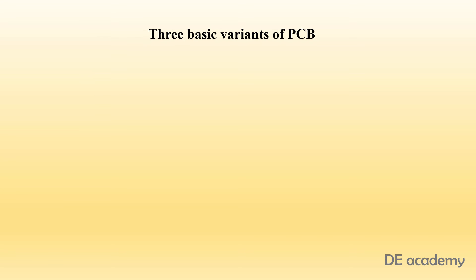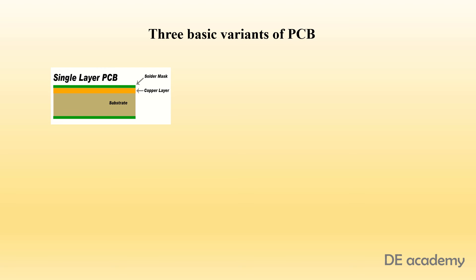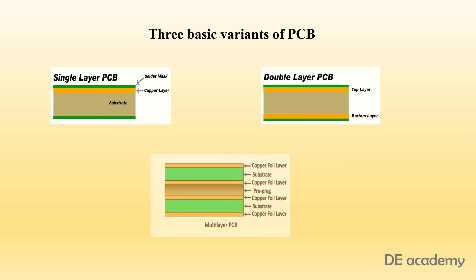There are three basic variants of printed circuit boards. Single-sided PCB, which means conductors on only one surface of a dielectric base. Double-sided PCB, with conductors on both sides of a dielectric base — usually the two layers are interconnected by plated through holes. Multi-layer PCB, with conductors on three or more layers separated by dielectric materials.